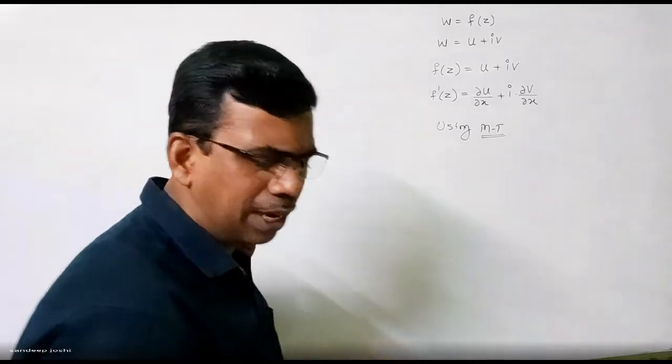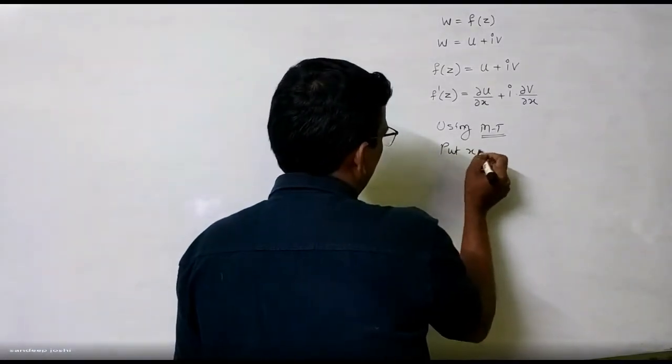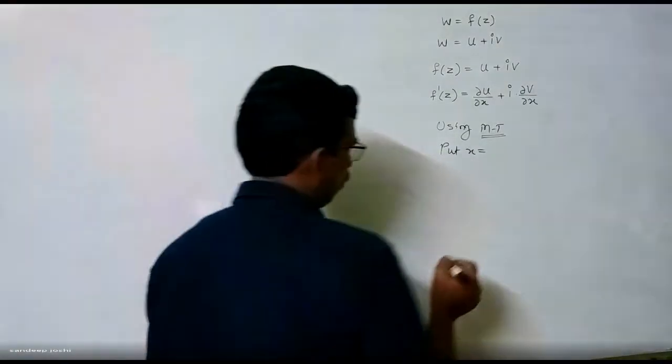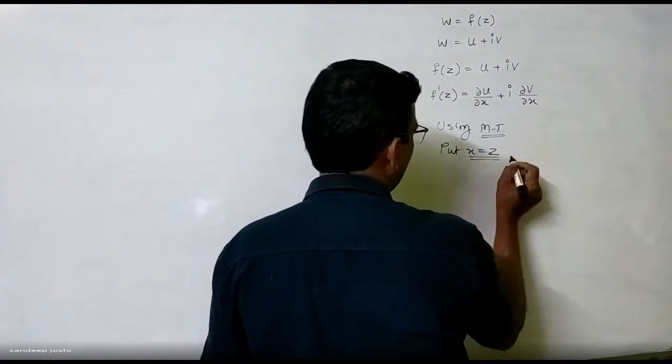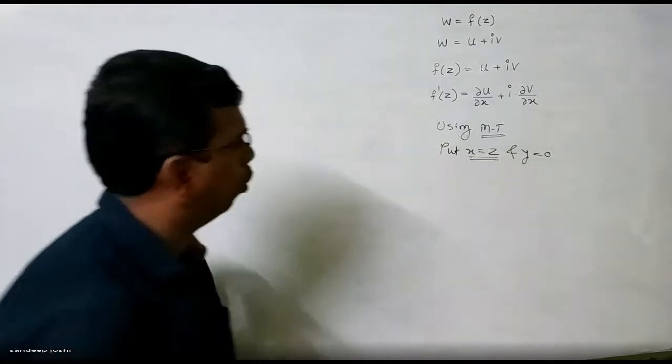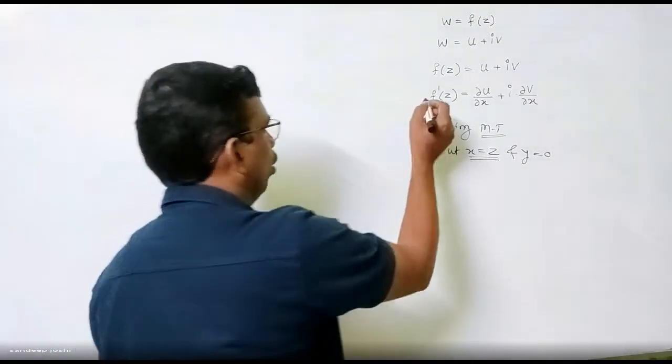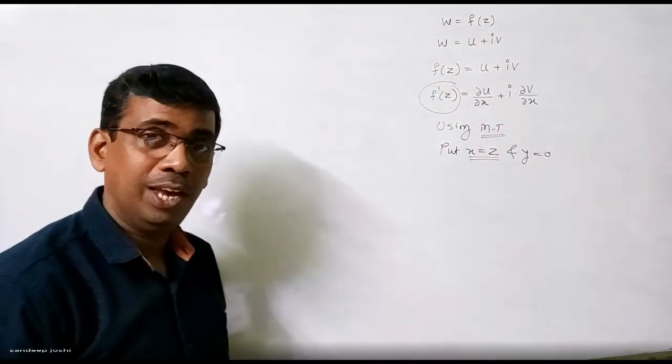Generally what we can say, it is very simple. Put X is equal to something and Y is equal to something to get the equation, to get the final answer of F dash of Z. Is it right? Yes sir.